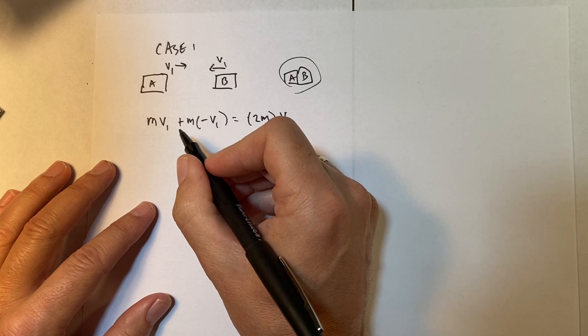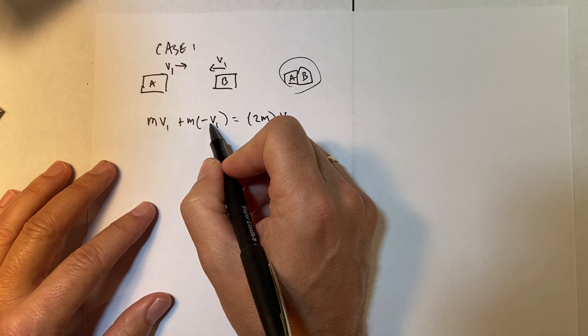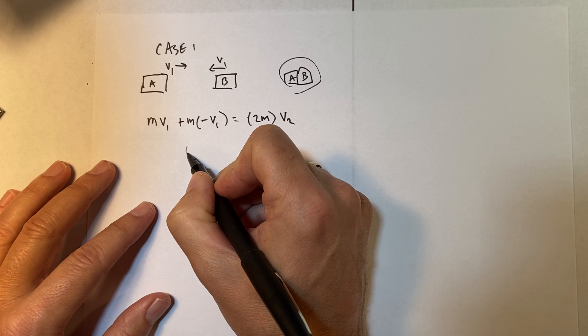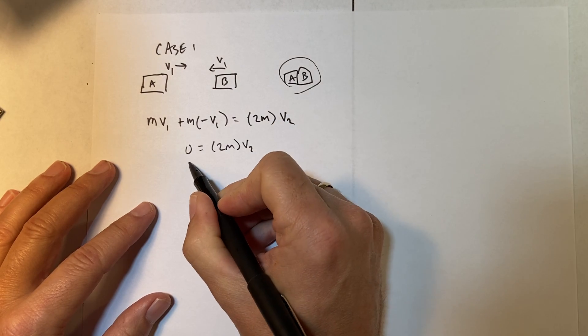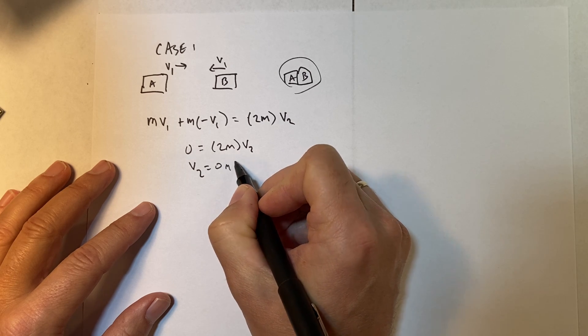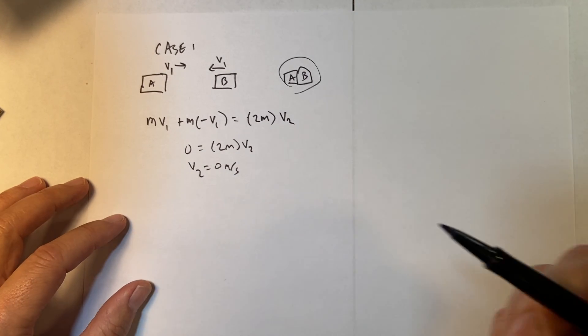And this would be equal to 2M times V2. So V2 is the velocity of this thing afterwards. And this is the mass of the thing afterwards. It's one object now of mass 2M. And you see here that this side, if I have M plus M and V1 and negative V1, this has to be zero. So this is going to be 2MV2. So V2 equals zero meters per second, which I already knew that. I'm just trying to show you how that works.